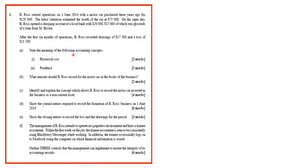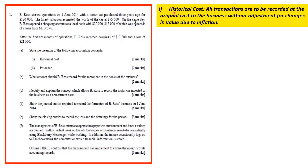Part E asks for the meaning of the following accounting concepts: historical cost, and part 2, prudence. Historical cost means all transactions are to be recorded at the original cost to the business without adjustment for changes in value due to inflation.